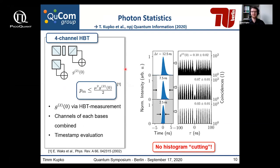If we apply temporal filtering and compute the autocorrelation from these temporally filtered timestamps, one can clearly see that — due to the better signal-to-noise ratio — one can better estimate the real single photon purity of the source. Importantly, this is different from simply cutting the histogram after performing the autocorrelation: we autocorrelate the filtered timestamps instead of using just a fraction of the calculated histogram.